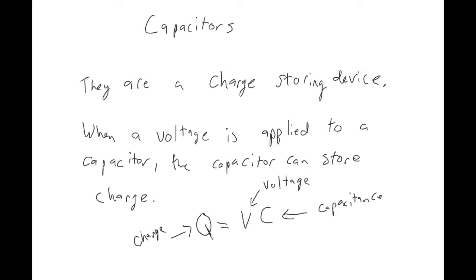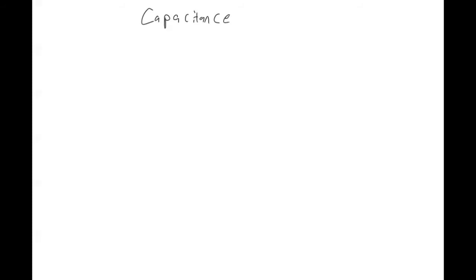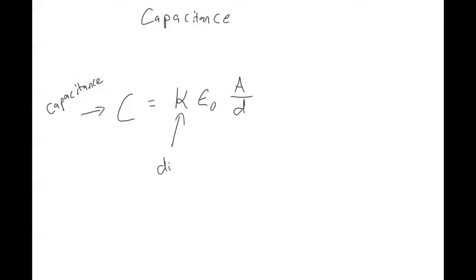You've already seen charge and voltage, and we'll talk about capacitance in a second. The capacitance of a capacitor can be determined using this equation. One way you can think about capacitance is just how good a capacitor is at storing charge. This term here is called the dielectric constant, and I'll come back to that in a moment.